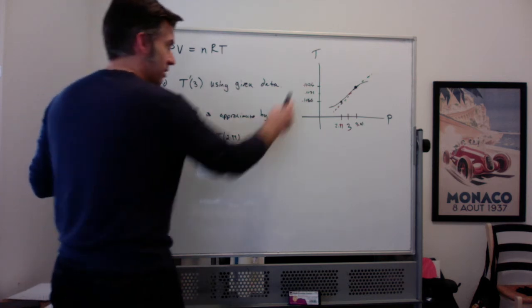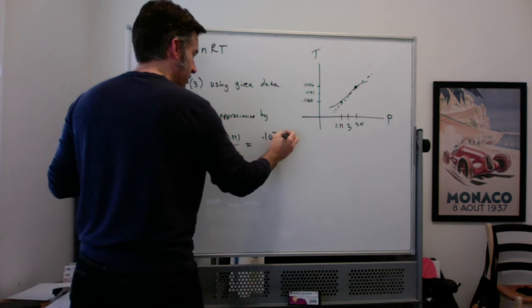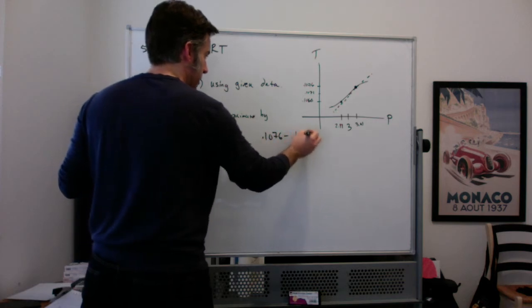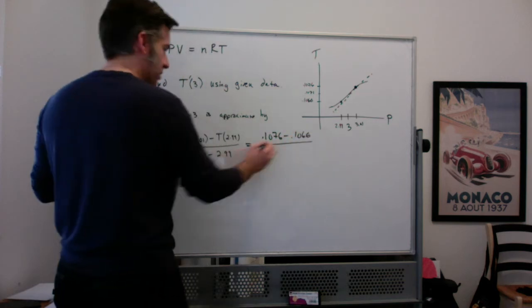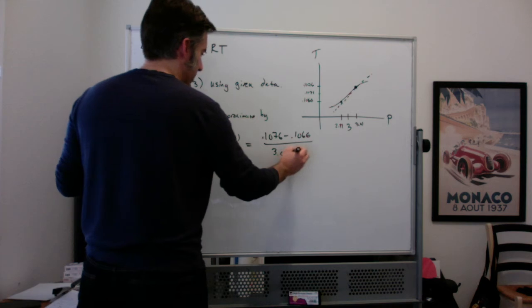So that's going to be 0.1076 minus 0.1066 divided by 3.01 minus 2.99.